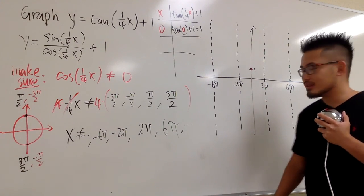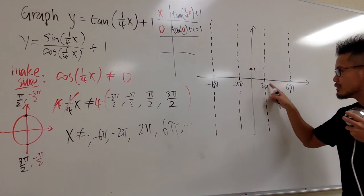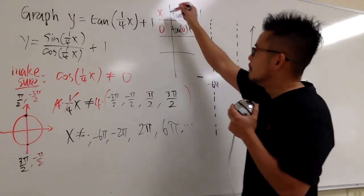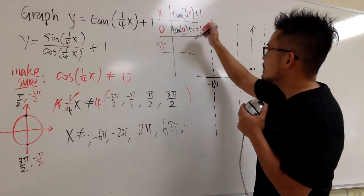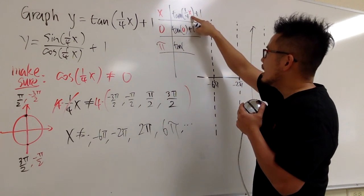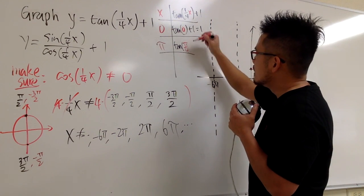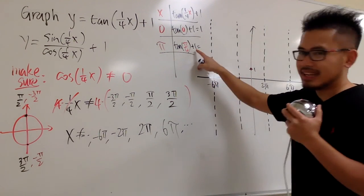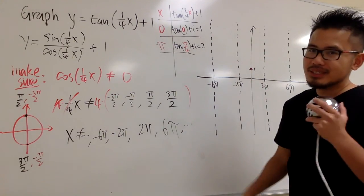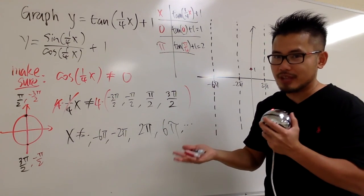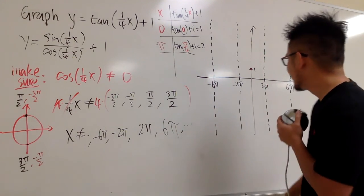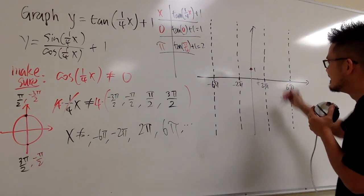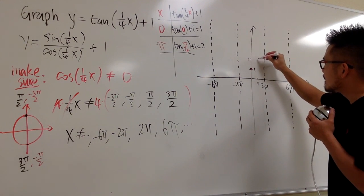The midpoint between 0 and 2π is π, so let's plug in x = π. We get tangent(π/4) + 1 = 1 + 1 = 2. The plus 1 shifts the entire tangent graph up by one unit. So (π, 2) is another point on our graph.